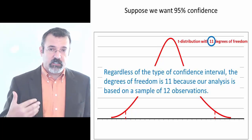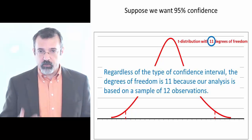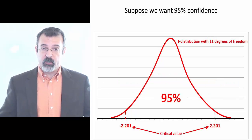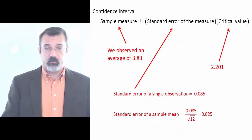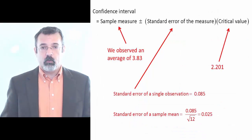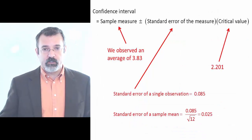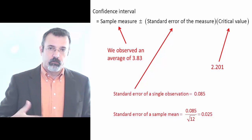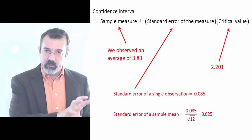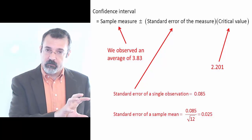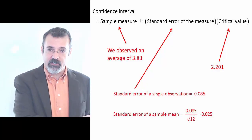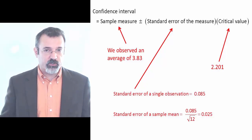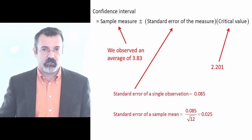Using the t11 distribution, we have a critical value of 2.101. So we now have all the ingredients for the confidence interval: our sample measure of 3.83, the critical value of 2.101, and the standard error of the measure — either 0.085 if we're building a confidence interval for the price of gas at a single gas station, or 0.025 if we're building a confidence interval for the average price of gas over 12 gas stations.